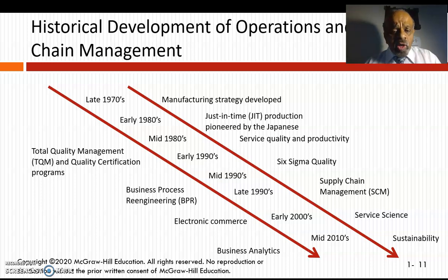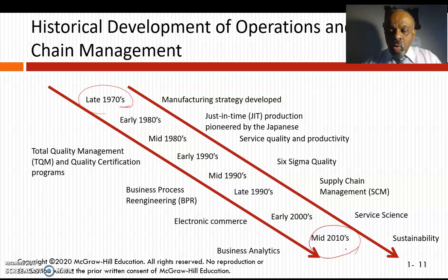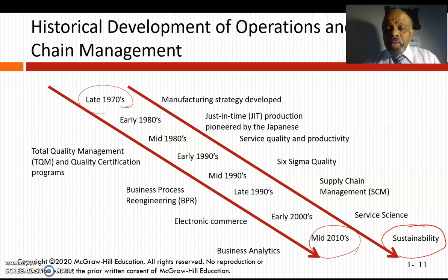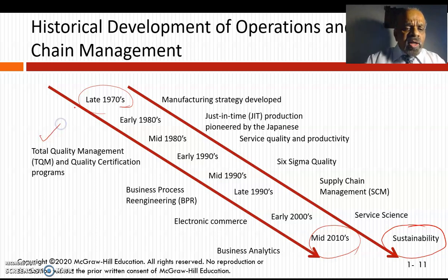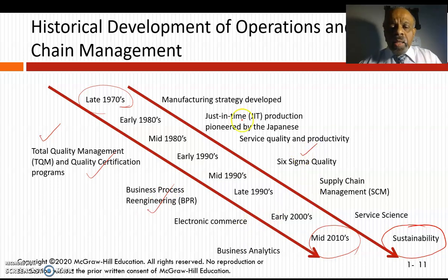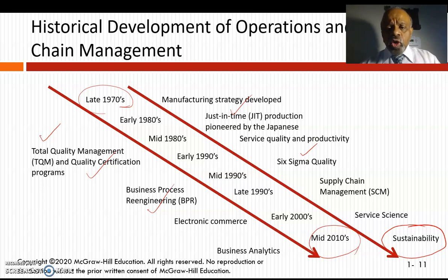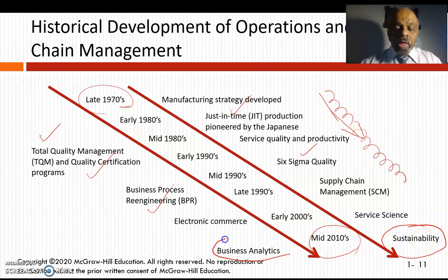The historical development of operations and supply chain management started in the late 1970s and is still going strong. Over the years, key developments included total quality management, quality certification programs, business process re-engineering, Six Sigma, and just-in-time manufacturing. All of these are still practiced today — it has been a cumulative effort, building from one development to the next.